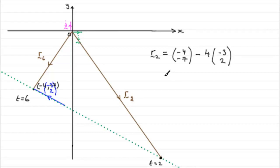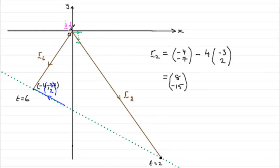If we do that, we get minus four plus twelve, which is eight, and minus seven minus eight, which is minus fifteen. So after two seconds, this position vector is at eight across and fifteen units down. That looks sensible according to the diagram.